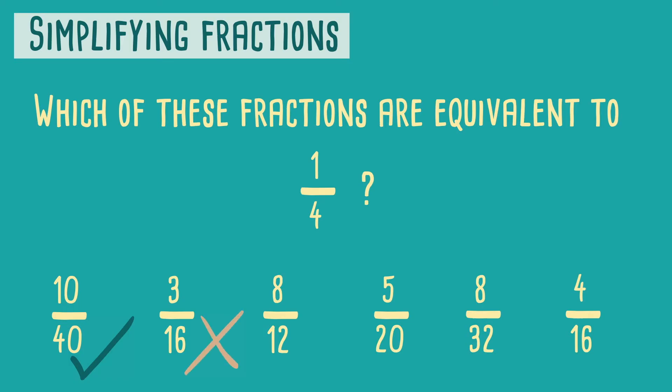10 over 40 is equivalent as both the top and bottom have been multiplied by 10. The next two fractions are not equivalent as the top and bottom of the original fraction has not been multiplied by the same number. 5 over 20 is equivalent as both numbers have been multiplied by 5. 8 over 32 is also equivalent as the numerator and denominator have been multiplied by 8. Finally 4 16ths is equivalent to a quarter as the top and bottom have both been multiplied by 4.